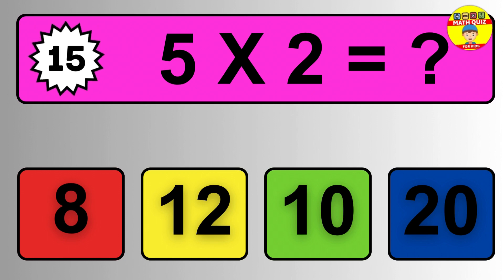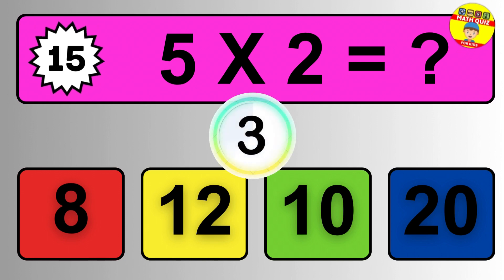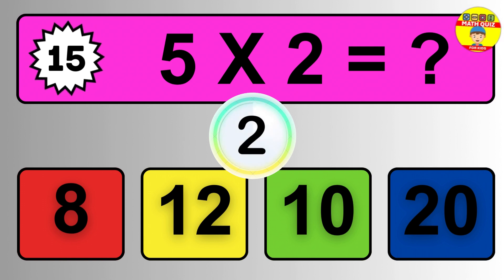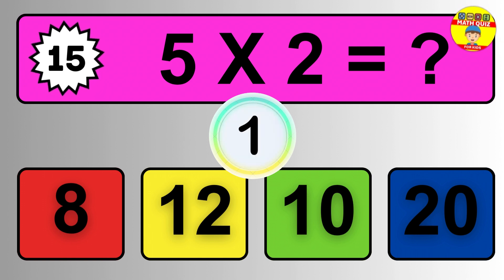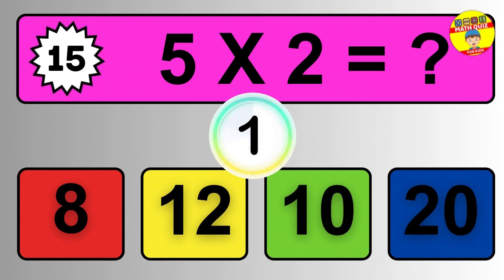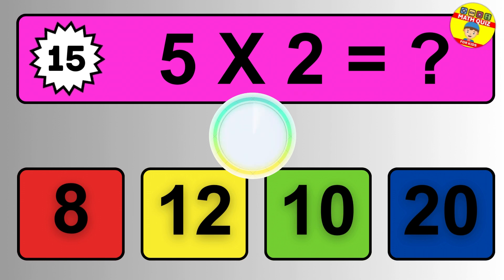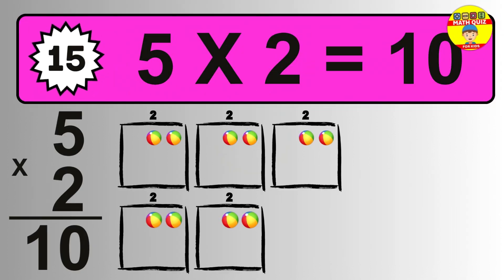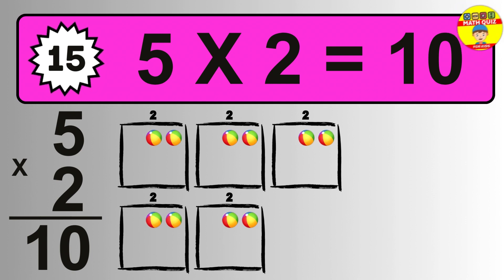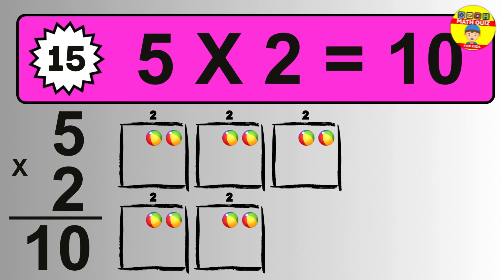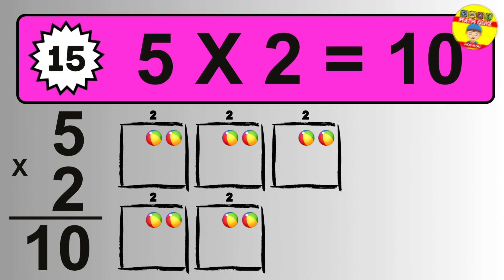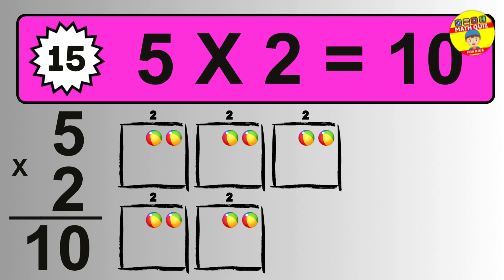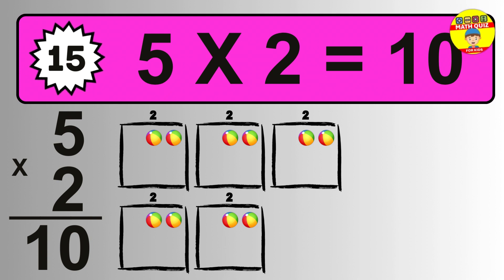Question fifteen: five times two equals what? The answer is five times two is ten. To calculate, we have five groups with two balls each. So how many balls do we have? Ten balls.